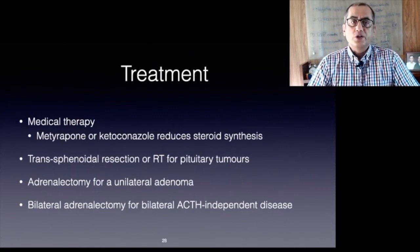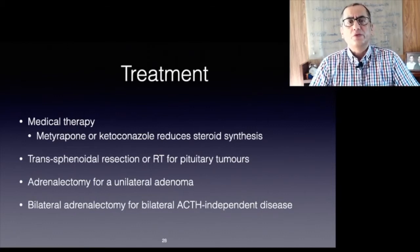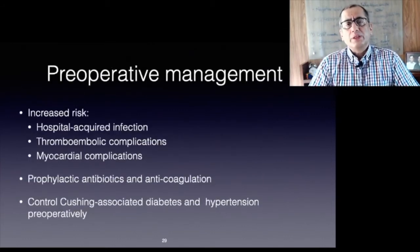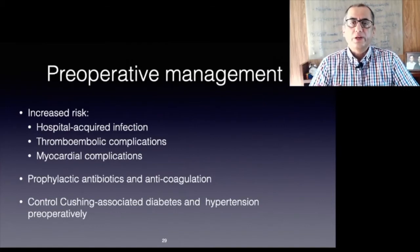A unilateral adenoma is treated by adrenalectomy. In cases of bilateral ACTH-independent disease, bilateral adrenalectomy is the primary treatment. Patients with ectopic ACTH-dependent Cushing's syndrome and an unresectable or unlocalized primary tumor should be considered for bilateral adrenalectomy to control hormone excess. Subclinical Cushing's caused by a unilateral adenoma is treated by unilateral adrenalectomy. Patients with Cushing's syndrome are at increased risk of hospital-acquired infection, thromboembolic complications, and myocardial complications; therefore prophylactic anticoagulation and antibiotics are essential.